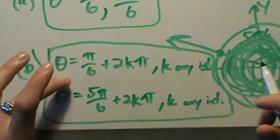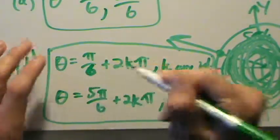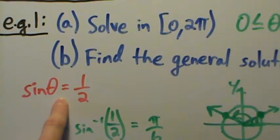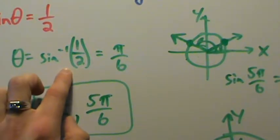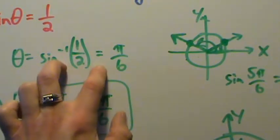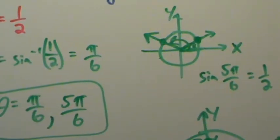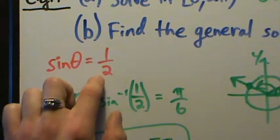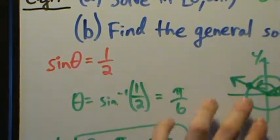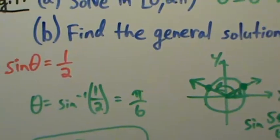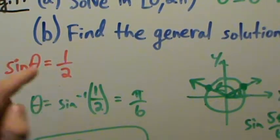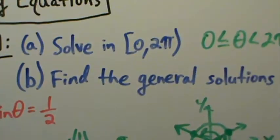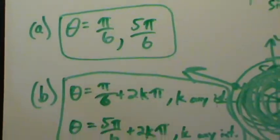To recap: solve in the interval 0 to 2π, sine of theta equals 1/2. Be careful with inverse trig — it only gives one correct answer, so we use the unit circle to find the other. The answers for part A are π/6 and 5π/6, and the general solutions for part B are theta = π/6 + 2kπ and theta = 5π/6 + 2kπ. What's nice here is that 1/2 is a value that relates to the unit circle. In the next example, we'll look at what happens when the value isn't so nice — like 0.34.